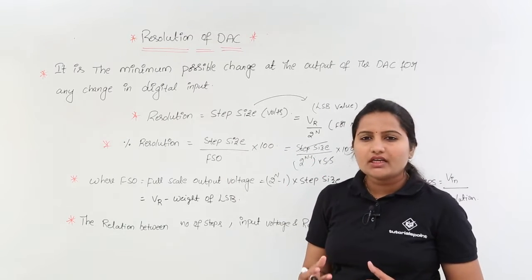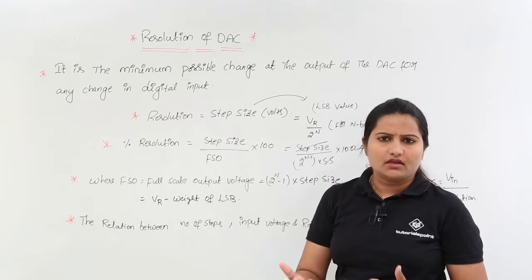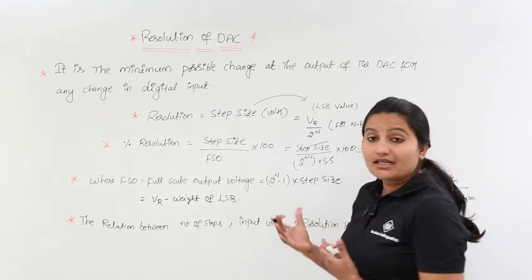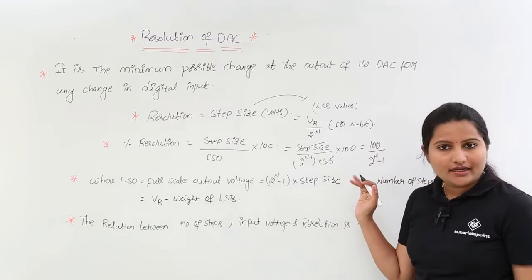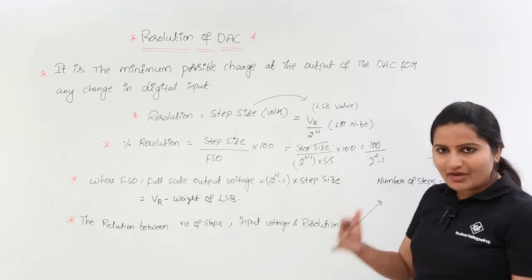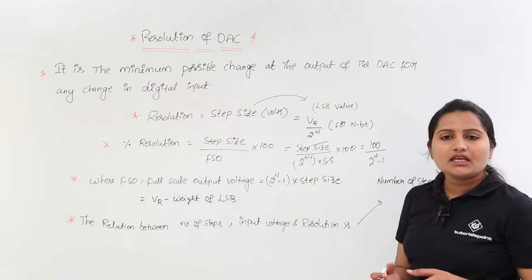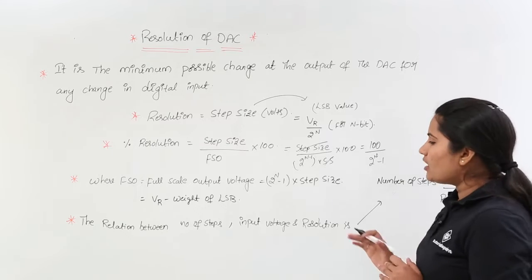Whenever you are asked to find percentage of resolution, use the formula: 100 divided by 2 power n minus 1, where n is the number of bits.